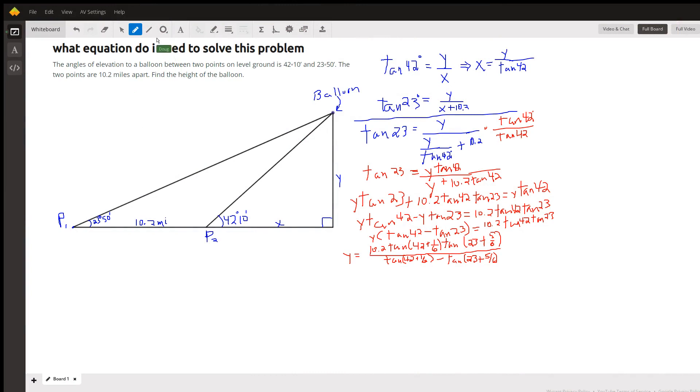Okay, here's the situation. We've got two points on level ground. I call them P1 and P2 that are 10.2 miles apart.